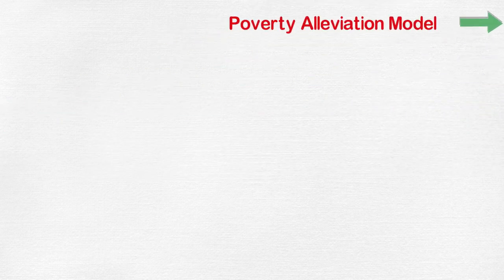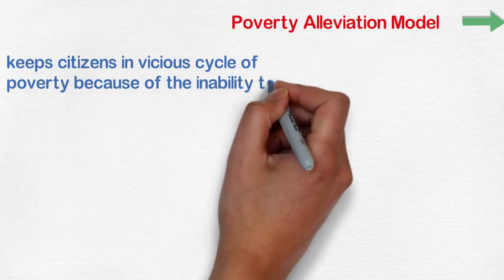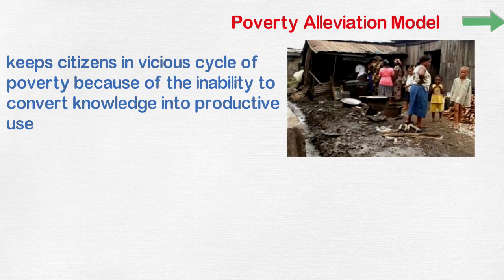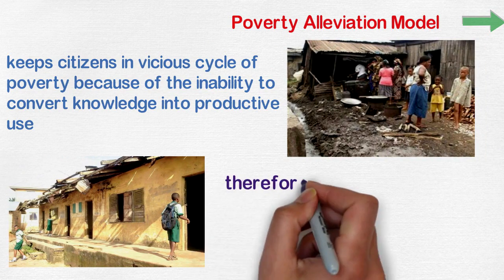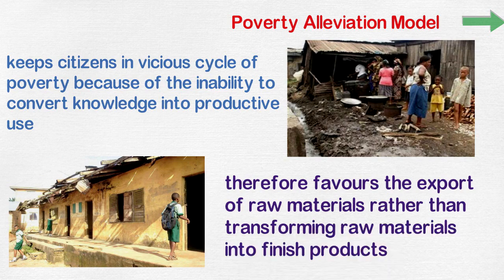Poverty alleviation model keeps citizens in vicious cycle of poverty because of the inability to convert knowledge into productive use, therefore favors the export of raw materials rather than transforming raw materials into finished products.